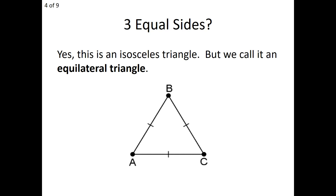Going back to that phrase 'at least' — what does that mean for us? It means an equilateral triangle is isosceles. Equilateral means all sides are equal, but if we define isosceles as having at least two sides equal, since an equilateral has three equal sides, then yes, an equilateral triangle is also an isosceles triangle.